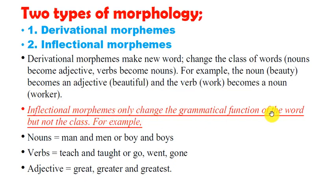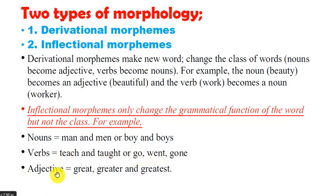Inflectional morphemes only change the grammatical function of the word but not its class. For nouns: 'boy' and 'boys.' For verbs: 'teach' and 'taught,' 'go,' 'went,' 'gone.' For adjectives: 'great,' 'greater,' 'greatest.' The grammatical function of the word changes but not its word class.